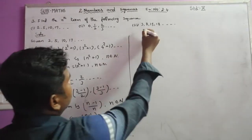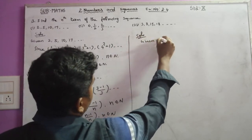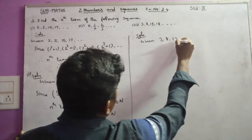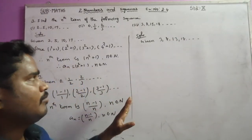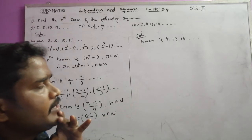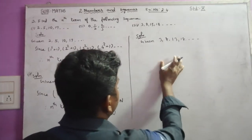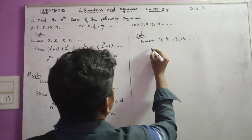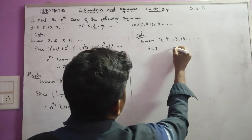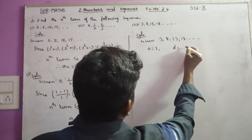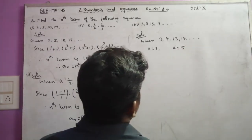Next is the third solution. Solution. Given: the sequence is 3, 8, 13, 18, and so on. If you use the formula — we will use the formula directly. Let t1 equal 3. The common difference d: t2 minus t1 equals 8 minus 3 equals 5.